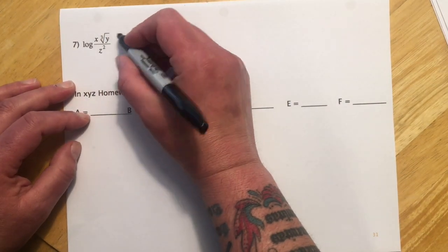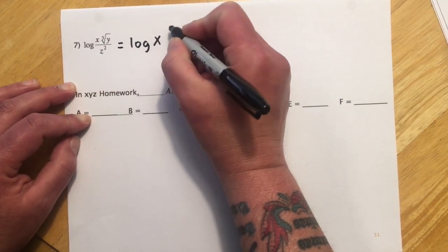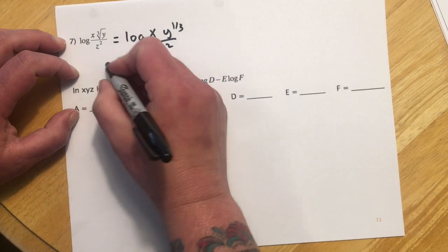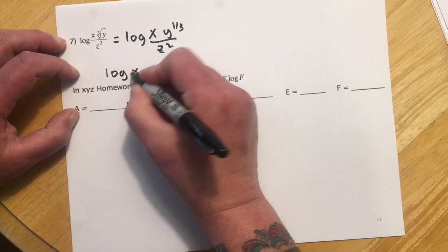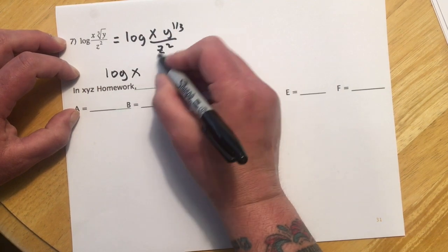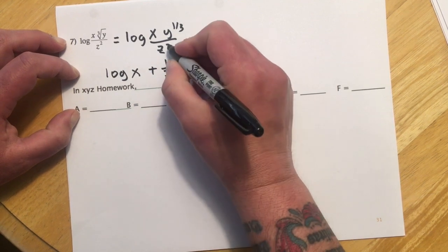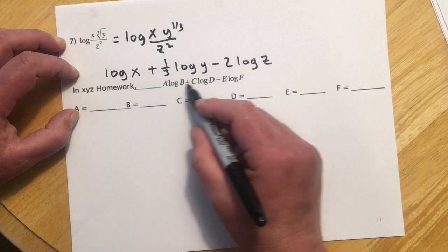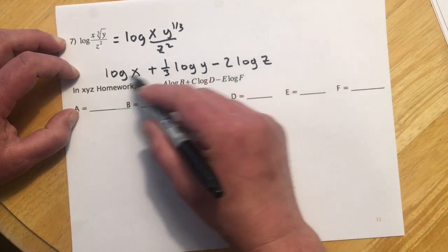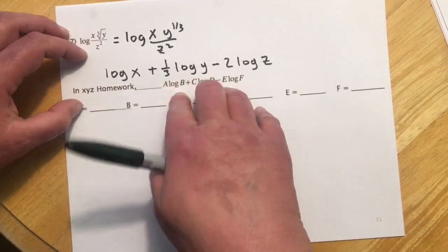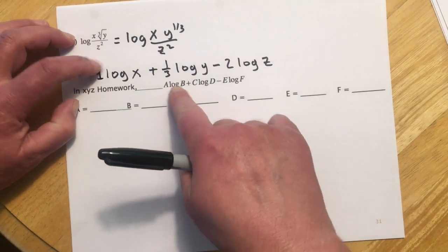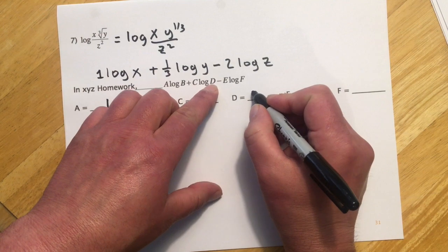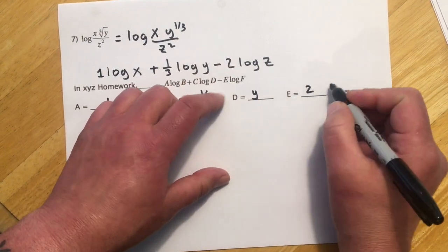Number 7: I'm going to treat the cube root as a one-third exponent. We write it as x times y to the one-third, and z squared. Expanding that gives log x — no power on x so just an invisible one — plus one-third log y, and z is in the denominator, so minus two log z. The way this will be entered is: they give you the template, and you plug in the values matching each position — so a=1 (invisible coefficient), b=x, c=one-third, d=y, e=2, f=z.